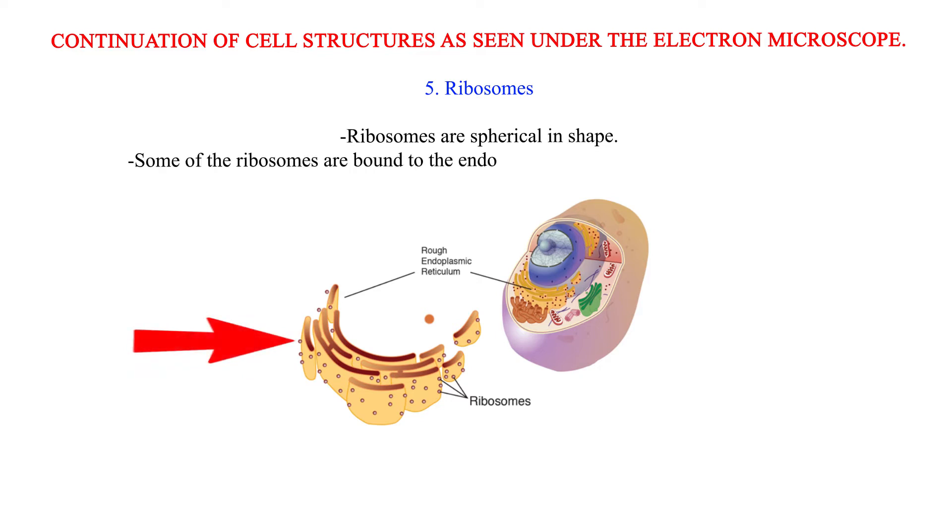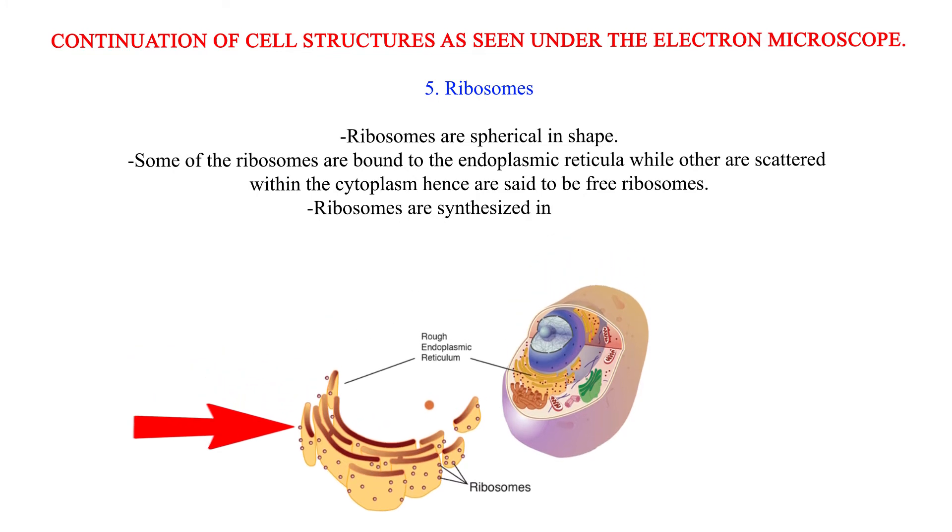Some of the ribosomes are bound to the endoplasmic reticula while others are scattered within the cytoplasm, hence are said to be free ribosomes.